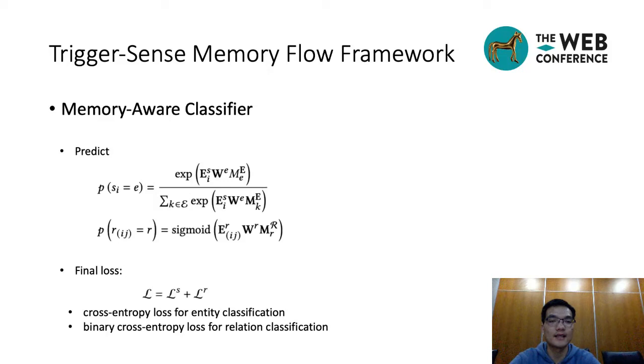Representations of the entity and relation categories are stored in entity memory and relation memory, respectively. Based on the bilinear similarity between the instance representation and the category representation, we compute the probability of candidate span being an entity E, and the probability of candidate span pair having a relation r. Finally, we define a joint loss function for entity classification and relation classification. L is the loss, Le is cross-entropy loss, and Lr is binary cross-entropy loss.